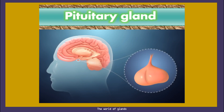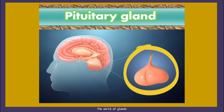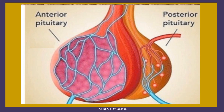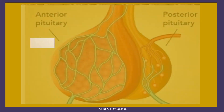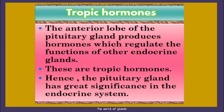The pituitary gland is located at the base of the brain, just below the hypothalamus, to which it is attached through nerve fibers. It is a part of the endocrine system and produces critical hormones — chemical substances that control various body functions. The gland has two parts: anterior pituitary and posterior pituitary. The anterior lobe produces hormones that regulate the functions of other endocrine glands; these are called tropic hormones. Hence the pituitary gland has great significance in the endocrine system.